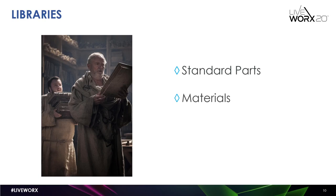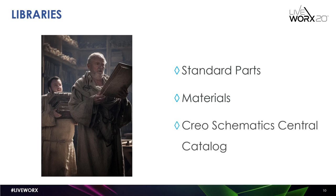Besides a standard parts library, you're going to need a materials library. This library should contain all the materials commonly used by your teams and should also contain material properties for performing structural, thermal, and modal analyses. You can either develop the materials library yourself, or you could license one from suppliers like Granta. If you are using other tools like Creo Schematics, depending on the number of users, you may need a central catalog and a librarian to manage that central catalog.